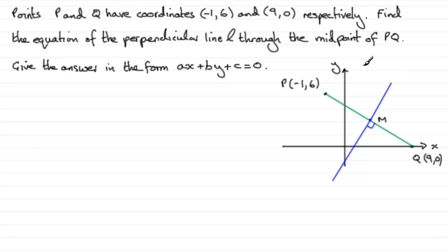No, the better form to use is Y minus Y1 equals M bracket X minus X1. You'll find me using this the majority of the time when we've got to find equations of lines.